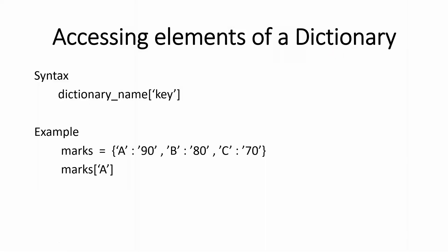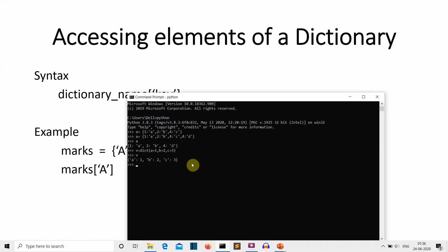To access any element of a dictionary, you need to call the key of that value. In the command prompt, using our v dictionary: if we write v['a'], then 1 will be printed because for the key 'a' we have the value 1. Similarly, v['c'] returns 3 because the key 'c' has value 3. This is how we access elements of a dictionary.